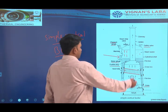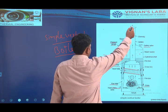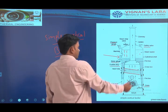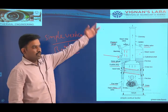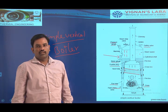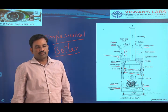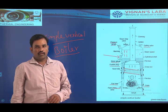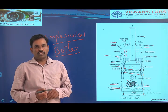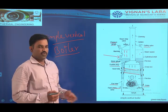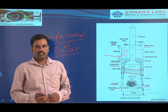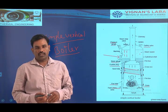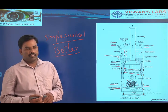Through the chimney, after utilizing the gases' energy in the boiler shell, we are introducing the hot flue gases into the outside atmosphere. This type of boiler we are using in stationary type of power plants, like food processing areas and chemical processes. We are using this type of boiler for smaller applications.